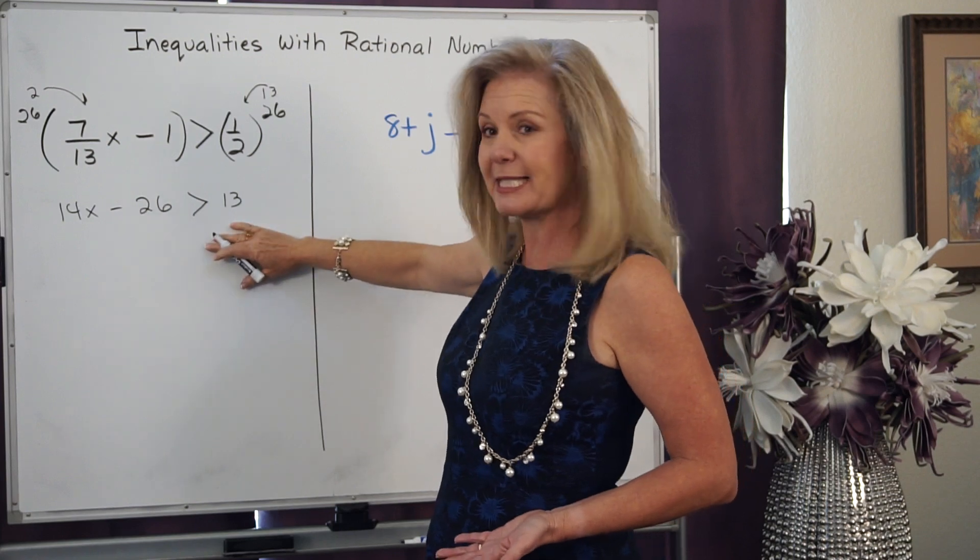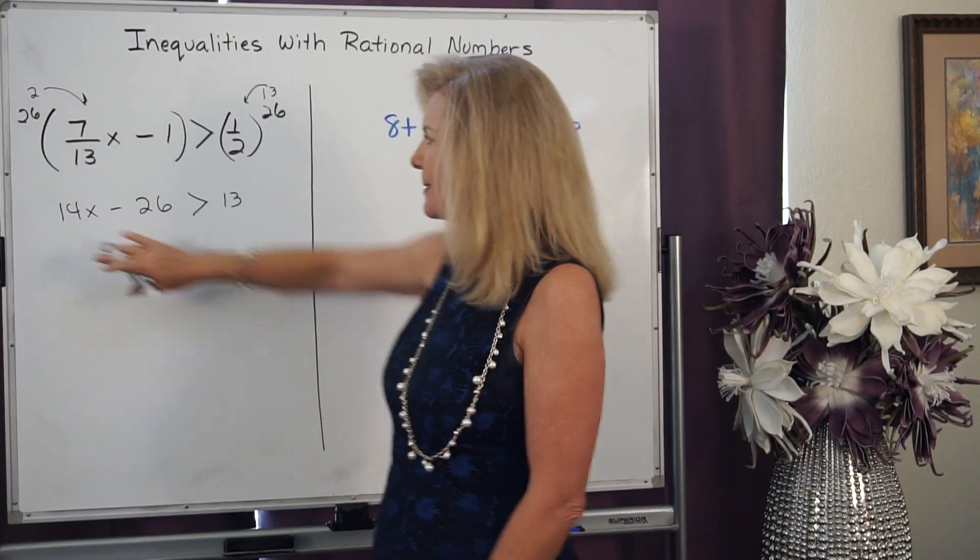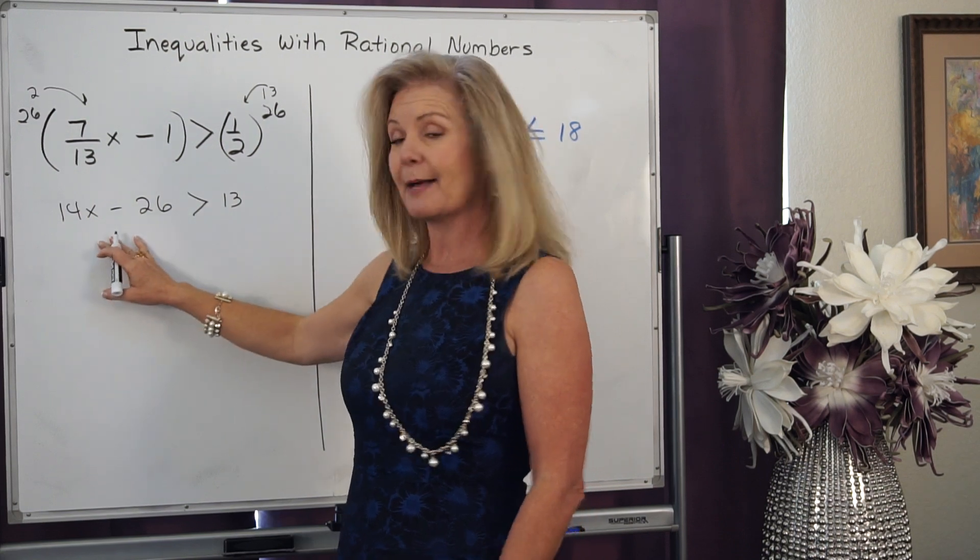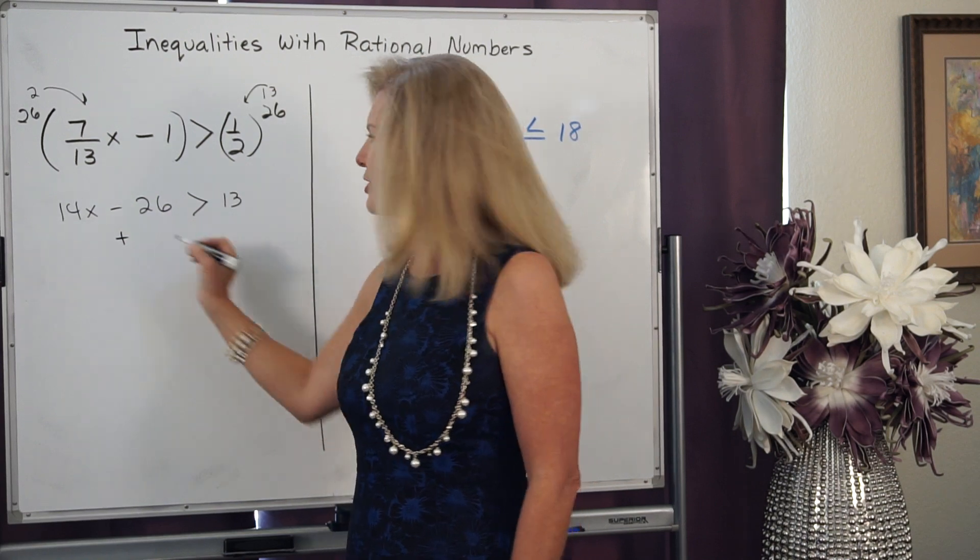Now I'm down to a two-step inequality. This is far easier to solve. So I'm going to start on the side that has my variable. I'm going to use inverse operations. So I'm going to do the inverse of subtraction, which is addition.